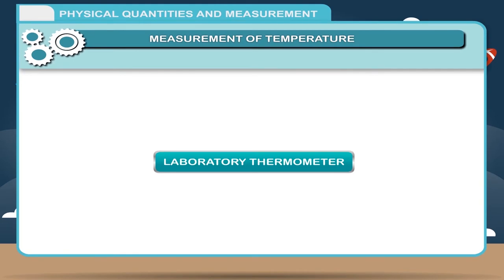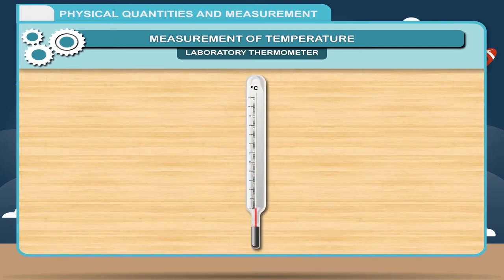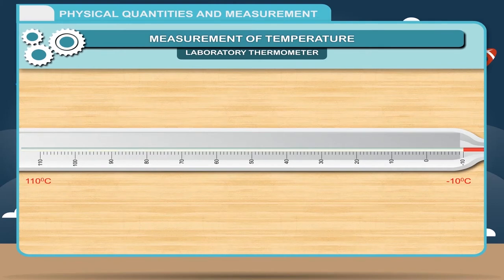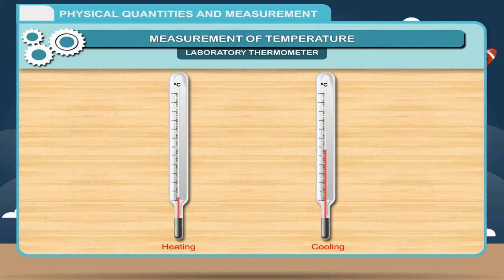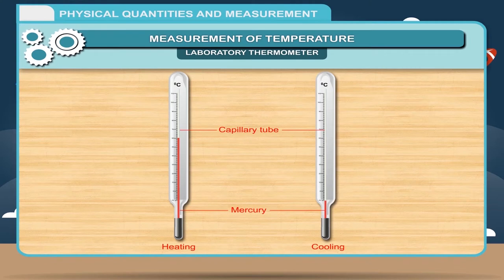Laboratory Thermometer: A laboratory thermometer is used to measure temperature in laboratories during various experiments. Generally, it is graduated from −10°C to 110°C. When the bulb is heated or cooled, mercury in the bulb expands or contracts and rises up or goes down through the capillary tube. The mercury can be seen through the stem as a thin shining thread. Mercury is preferred to other liquids as it is a liquid metal, a good conductor of heat, and expands uniformly.